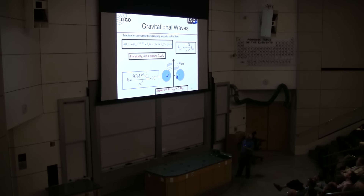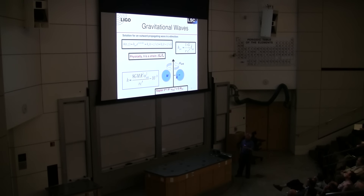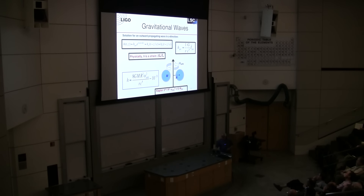If you put two stellar mass objects separated by tens of kilometers, orbiting by Kepler's law tens or hundreds or a thousand times a second, and you put it far away — like in the Andromeda galaxy, maybe a megaparsec away — you're talking about strains of 10 to the minus 21. It's a very, very small number.